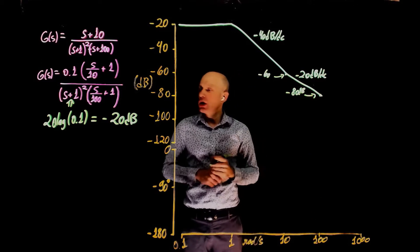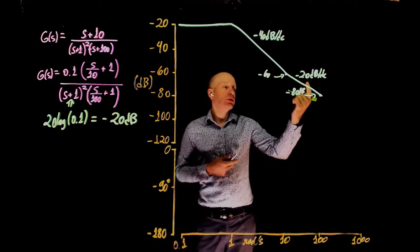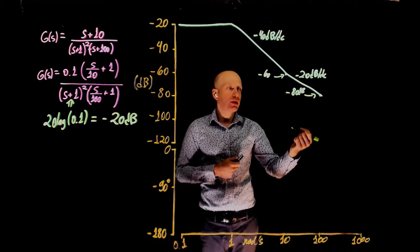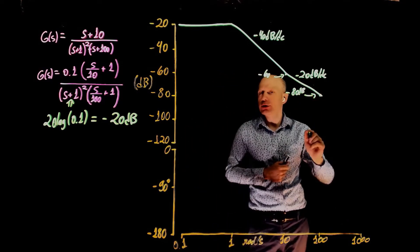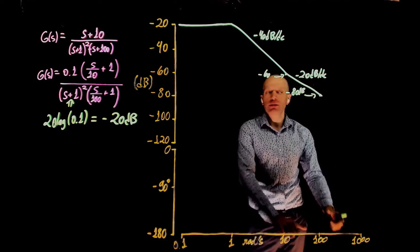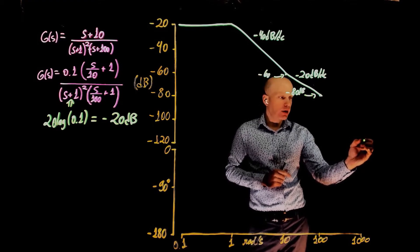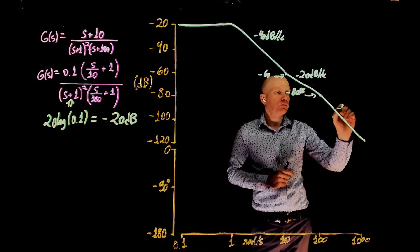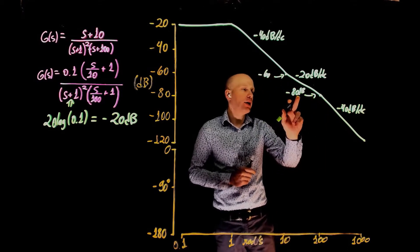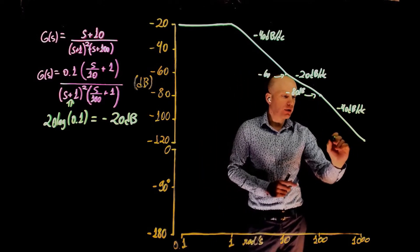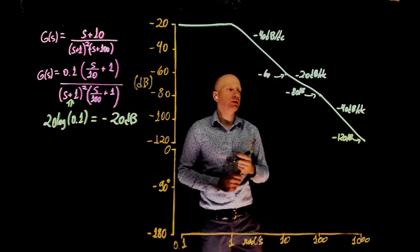When we reach 100 rad/s, we have another pole. The pole adds negative 20 dB per decade to the current slope, so the slope becomes negative 40 dB per decade. From 100 to 1000 rad/s the Bode plot goes down by another 40 dB. Since we were at negative 80 dB at ω=100, we reach negative 120 dB — sorry, negative 100 dB — at 1000 rad/s.